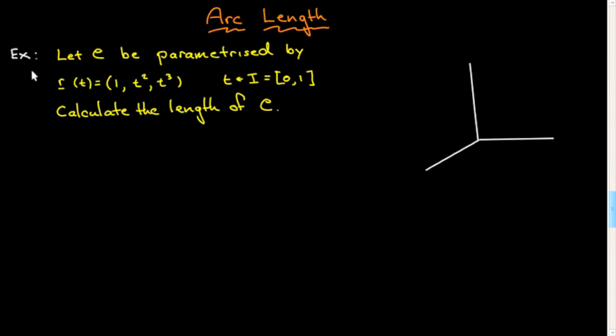So this would be an example of a typical problem you might be given. You let the curve C be parameterized by the following, so you're given the parameterization. In this case, I decided to make it three-dimensional. And you're given specifically the interval. So for computing arc length, this is really necessary so as to know how much of some curve you're referring to.